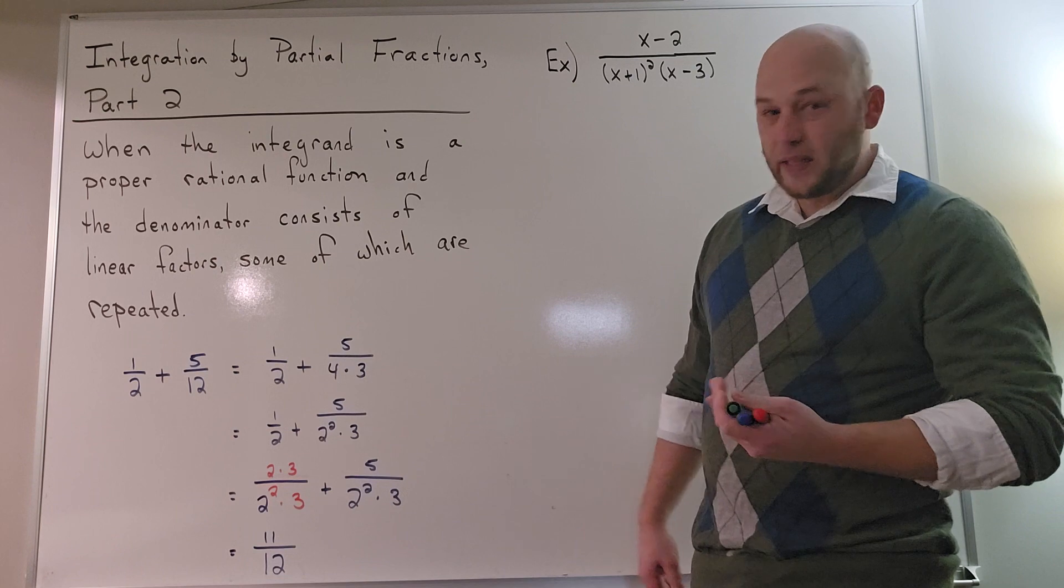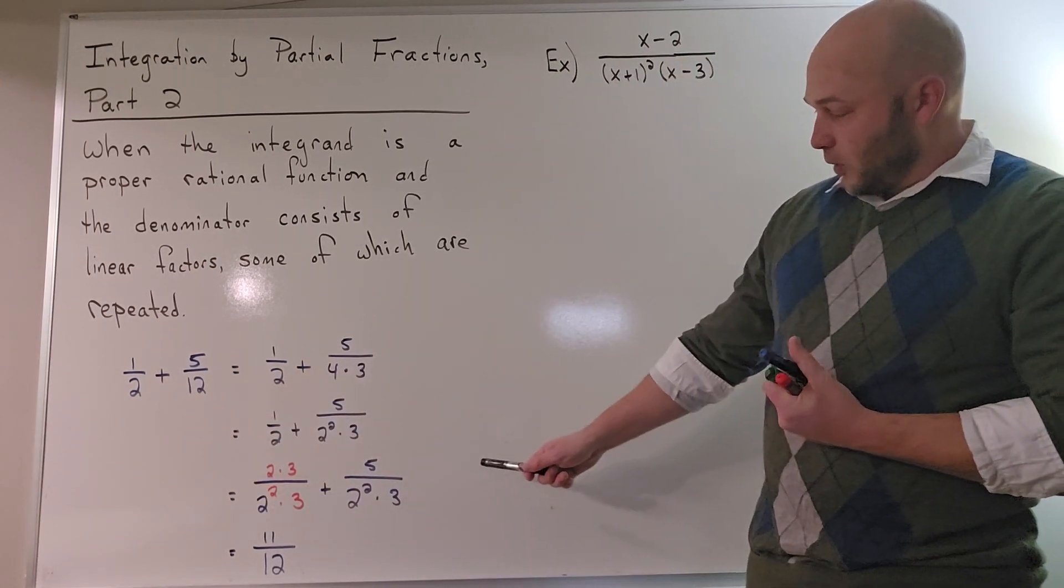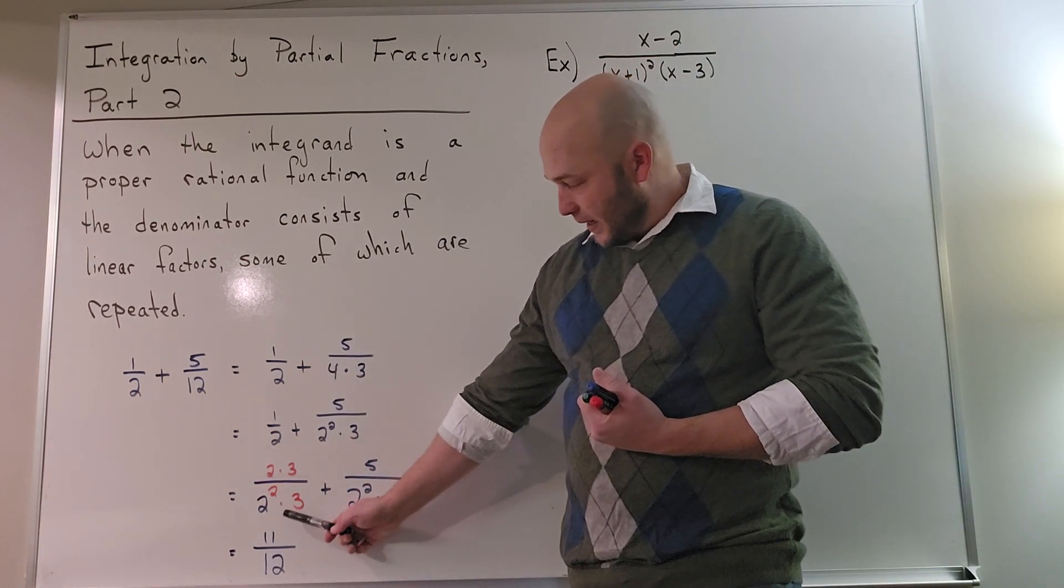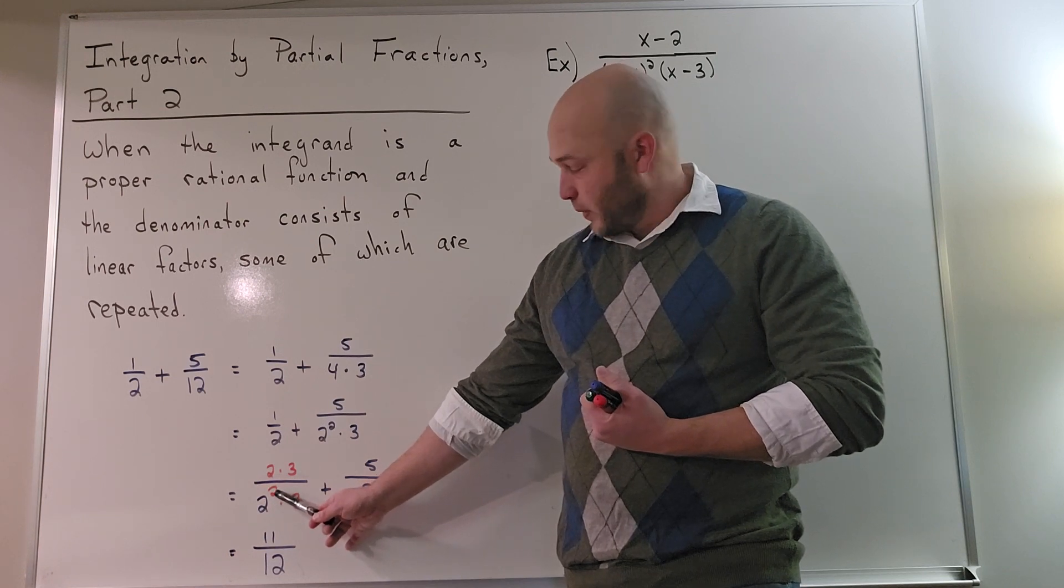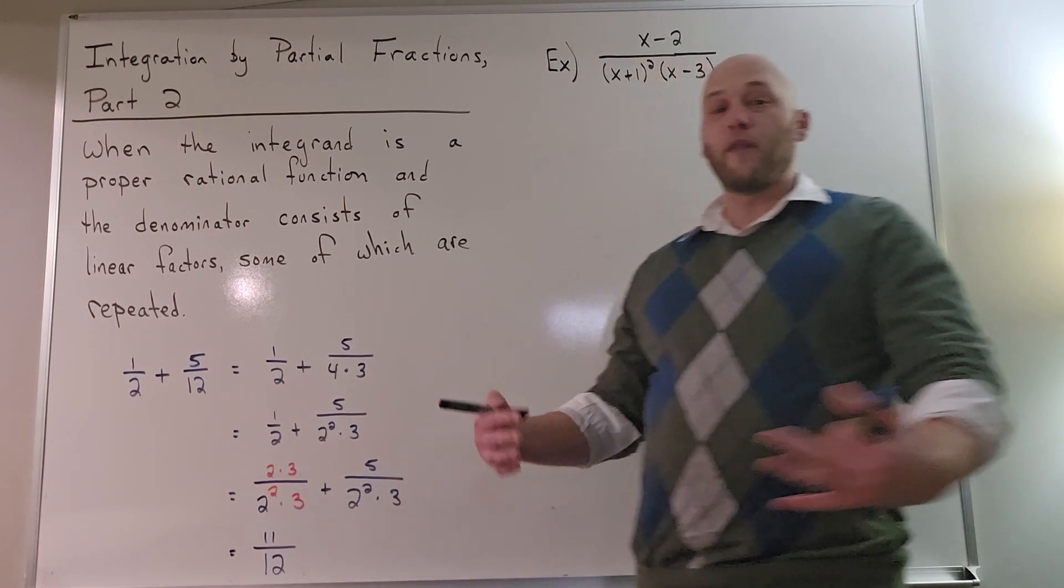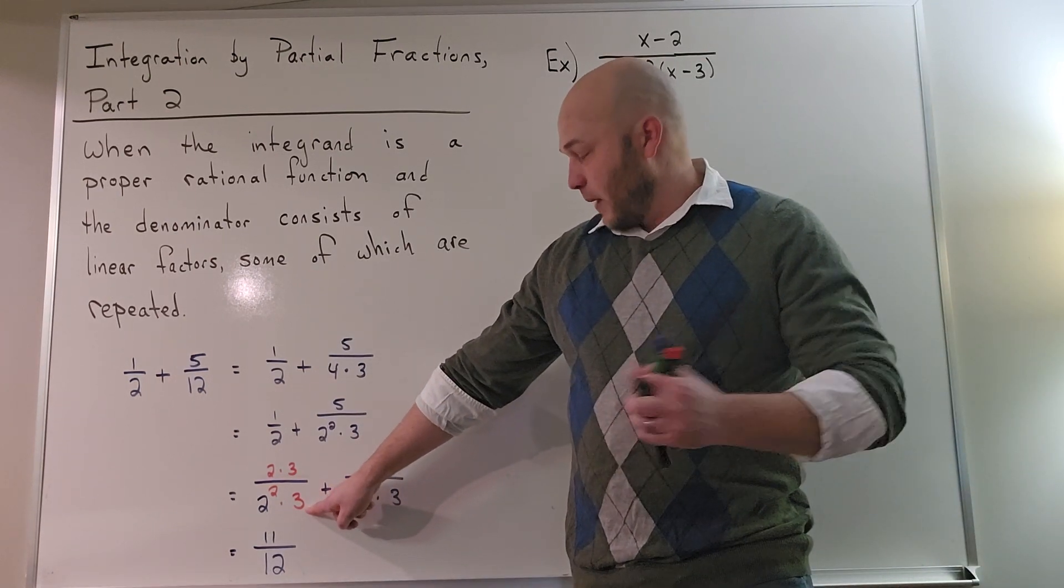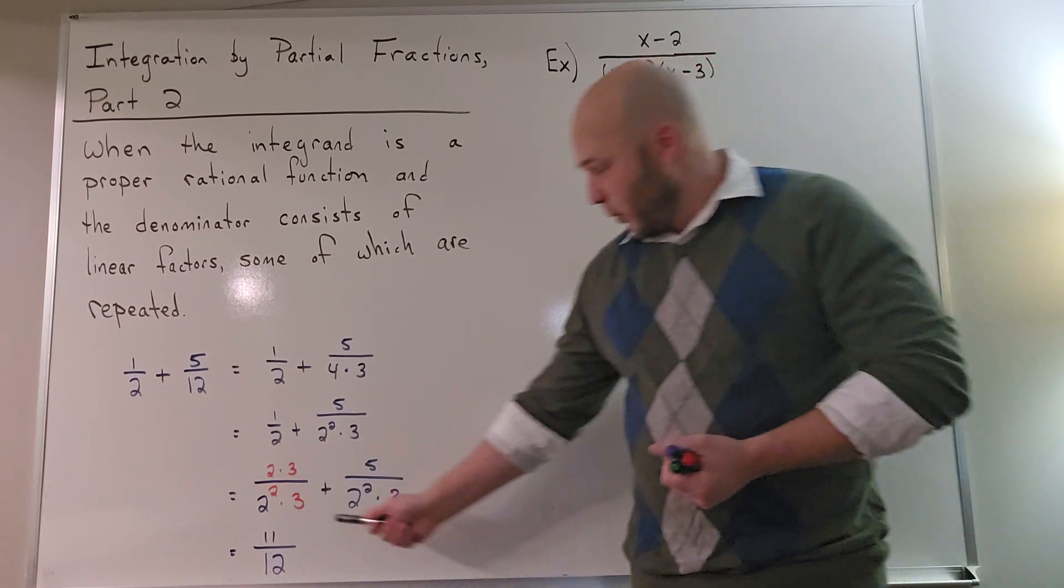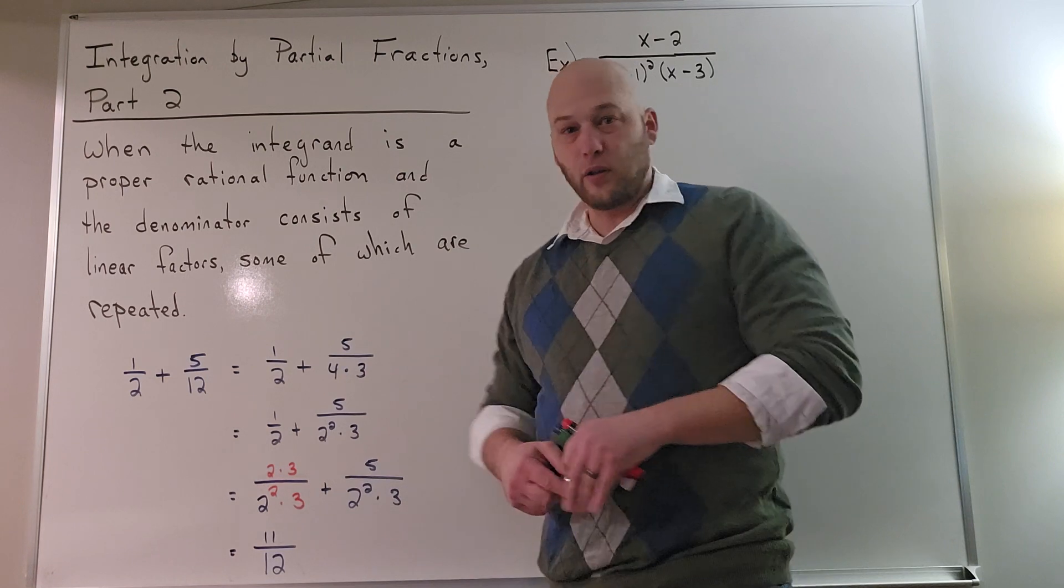Therefore, one half plus five twelfths would be the same thing as one half plus five over two squared times three. Now the least common multiple between these two would be 12. If I take a look back down here where I've got the prime factorization, what I need is another factor of two, so I've got a square on this one, and I also need a factor of three. To keep it balanced, I need to put a factor of two and three on top. And then at this point they both have a common denominator of 12, so we can add the numerators.